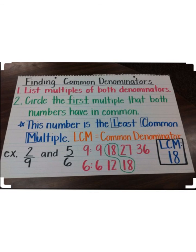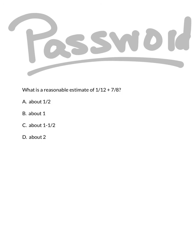Let's take a look at our notes for tonight's lesson, Finding Common Denominators. You can push pause here to copy all the notes into your journal. Tonight's password for this lesson: what is a reasonable estimate of one-twelfth plus seven-eighths? Is it about one-half, about one, about one and one-half, or about two? Be sure to work this out and bring it with you tomorrow as the password. See you then!